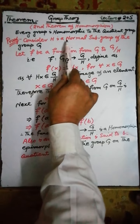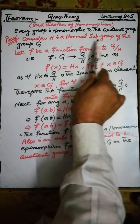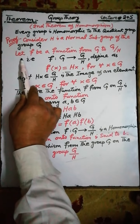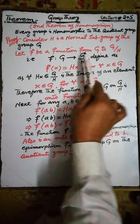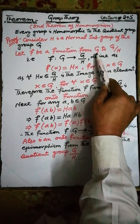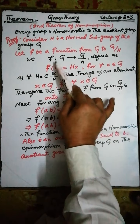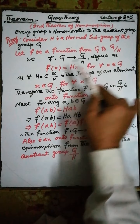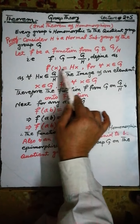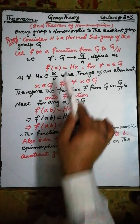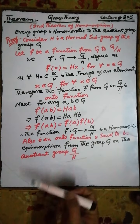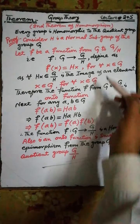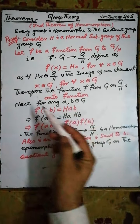Proof. Consider H is a normal subgroup of the group G. Let F be a function from the group G onto the quotient group G by H. Define F of X is equal to HX, for each X belonging to the group G.